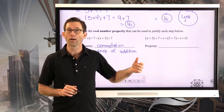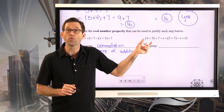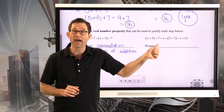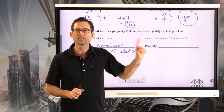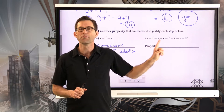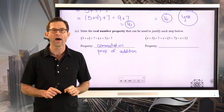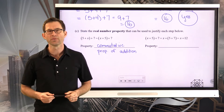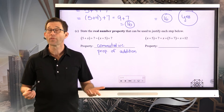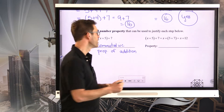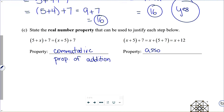But still, if I had x plus 5 plus 7, order of operations would still insist that I do x plus 5 first, get a result, and then add 7. So what exactly allows me to take x plus 5 plus 7 and decide that I'm going to add the 5 and the 7 first before adding x? That's the associative property of addition.